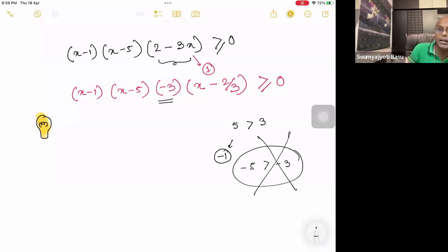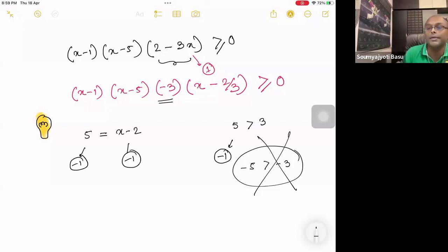In an equality, while solving an equation, let's say there is an equation something like this: 5 equal to x minus 2. You can multiply both sides by minus 1. There is no problem. But in an inequality, if you multiply both sides of an inequality by minus 1, you have to change the sign. 5 is greater than 3. If you multiply it by minus 1 on both sides, it becomes minus 5 less than minus 3. This has a very important implication.